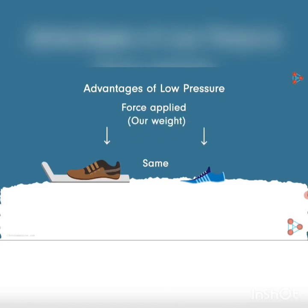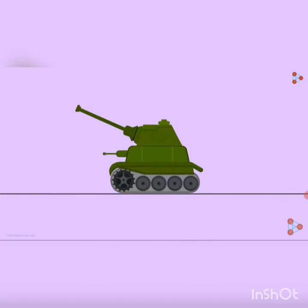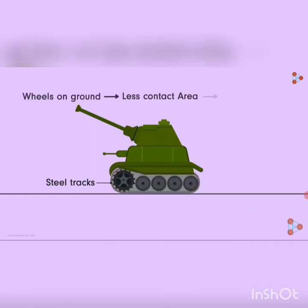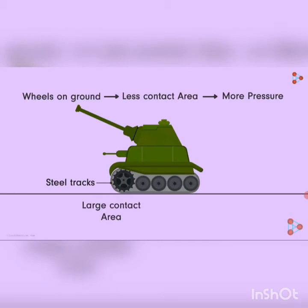Have you wondered why the wheels of an army tank run on steel tracks rather than directly on the ground? The tank's wheels sit on steel tracks and do not touch the ground. An army tank is huge; if the wheels ran directly on the ground, the small contact area would create massive pressure. The steel tracks have a much larger area of contact with the ground, greatly reducing the pressure on it.